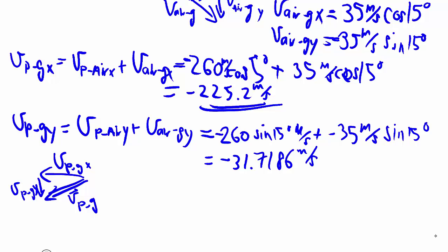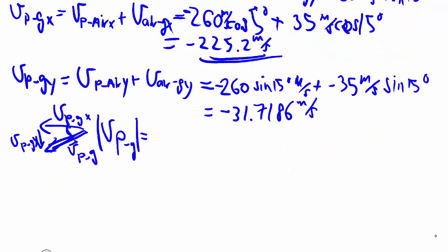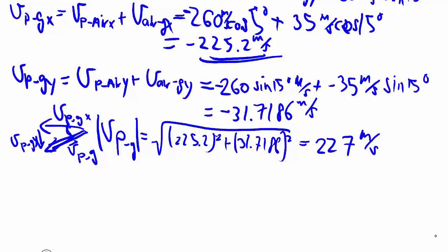Again, we typically want to put it back together in terms of magnitude and direction. The magnitude we can get using Pythagoras, again, gives us 227 meters per second, keeping only three significant figures because that's the final answer.